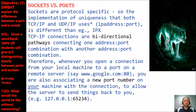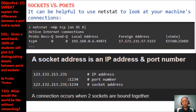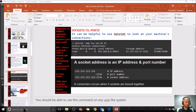TCP/IP connections are bidirectional pathways connecting one address-and-port combination with another. So when you open a connection from your local machine to a port on a remote server — say google.com — you're also associating a new port number on your machine with the connection, allowing the server to send things back to you. An example would be 127.0.0.1 on port 65234. Here's a great visual: IP address plus port equals a socket. You can use a tool called NETSTAT to look at your machine's connections — just open a command line and type NETSTAT.